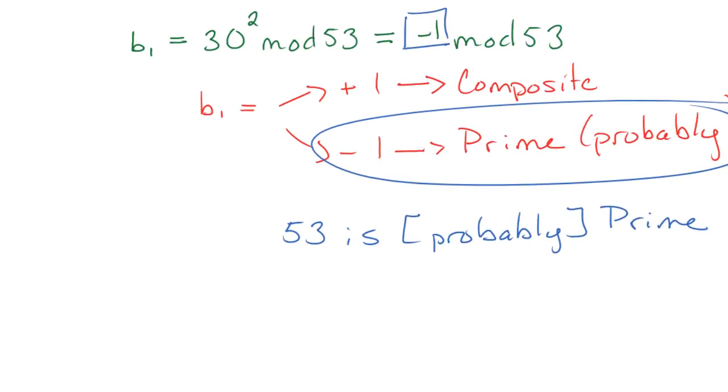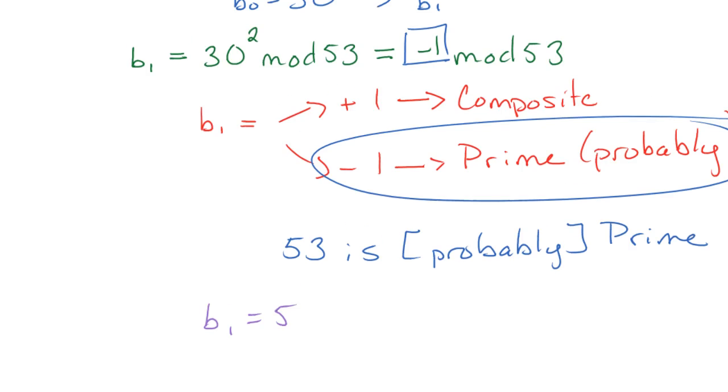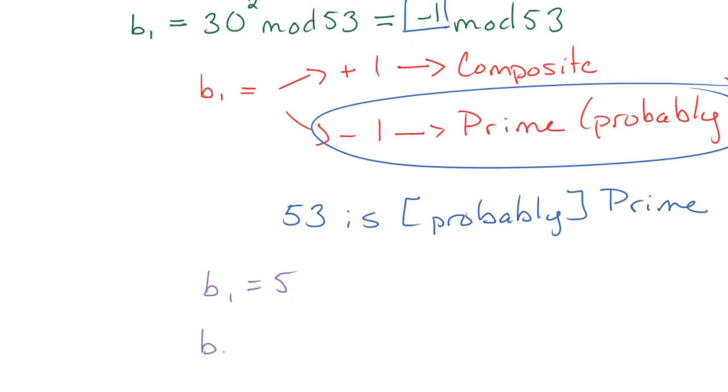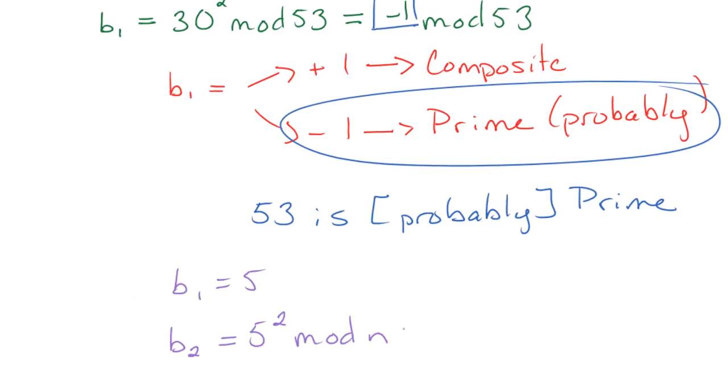Now, that's how you work that problem. I'm going to expand a little bit if the problem had not been this short. So say you have a problem where b1 equals 5 or something. Okay, that's not positive 1, that's not negative 1. So what we would have done then is we would have computed b2, which will be 5 squared mod n in this example.